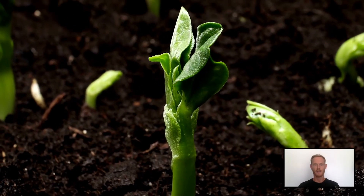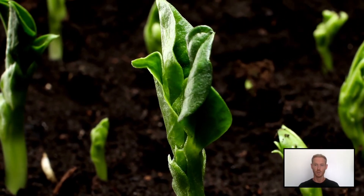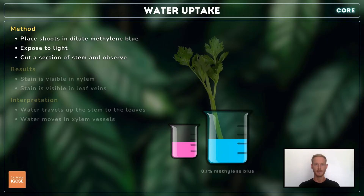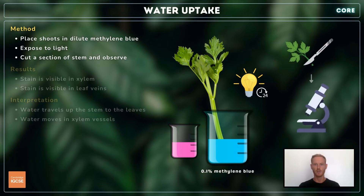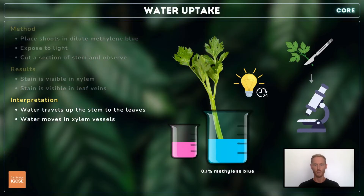Finally, you need to know how to practically investigate the movement of water through the above ground parts of a plant, otherwise known as the shoot system. A stain is used, which allows us to observe the movement of water. Simply place the shoots of a leafy plant like celery in a dilute solution of methylene blue or other suitable stain. Expose the shoots to light, and leave them in the dye for up to 24 hours. By cutting a section of the stem and observing it under the microscope, you should be able to see staining in the vascular bundles, specifically the xylem vessels. The dye may also be visible in some of the leaf veins. This experiment demonstrates that water moves up the stem to the leaves in xylem vessels.